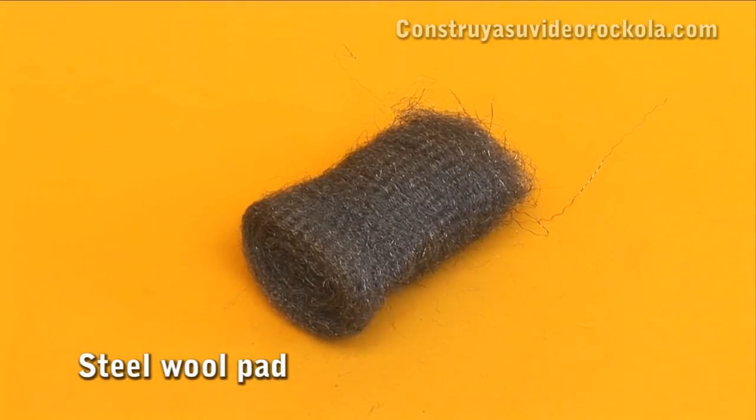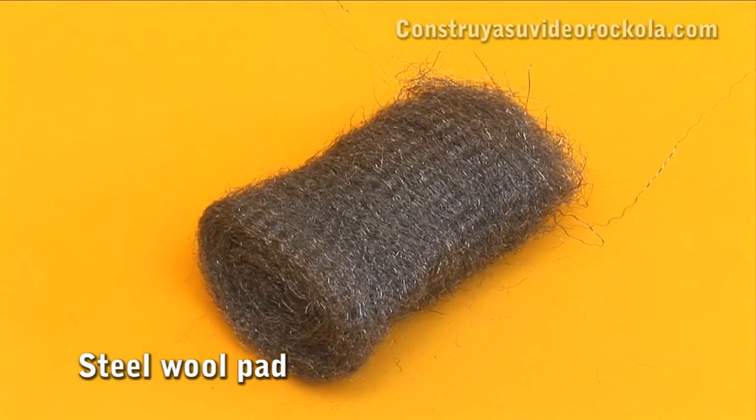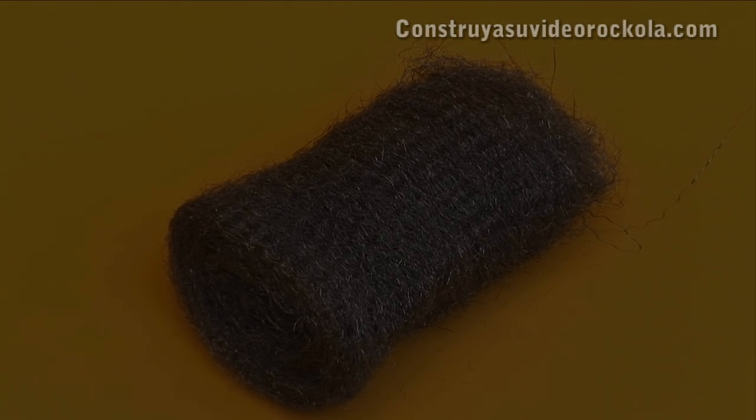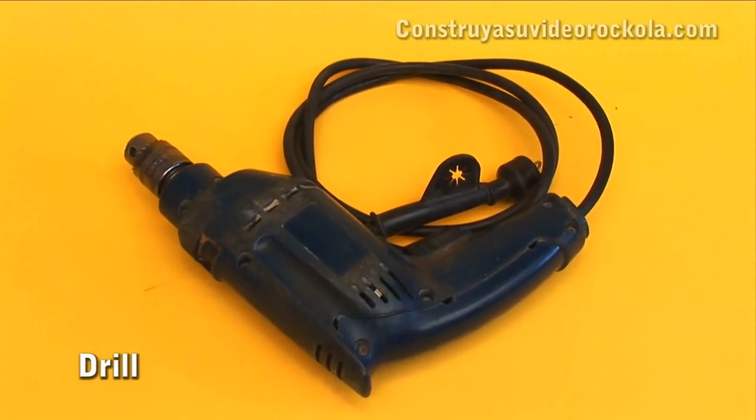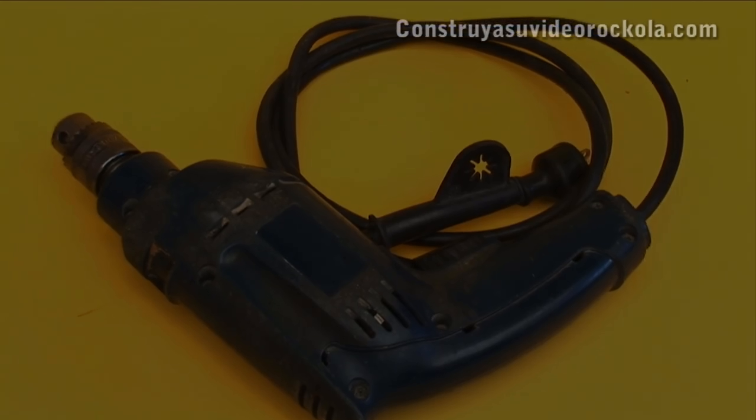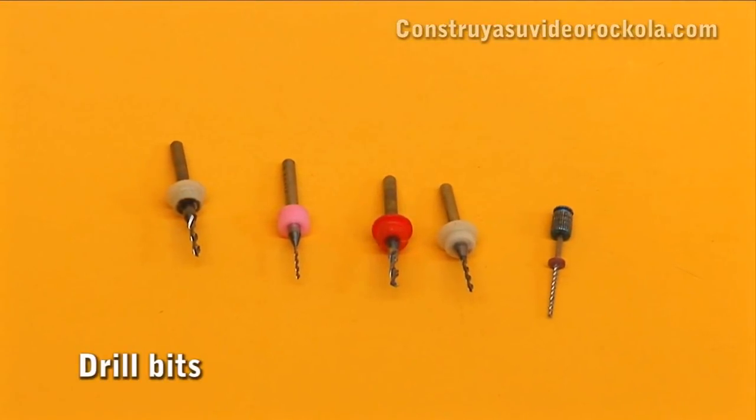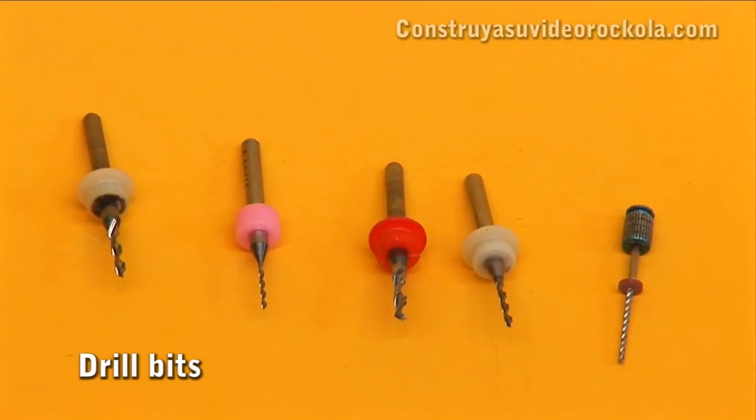Steel wool pad - used to clean the copper film bakelite virgin. Drill - used to drill holes where the legs or pins enter the components on the PCB. Bits - these should be of different sizes, depending on the thickness of the legs of the components.